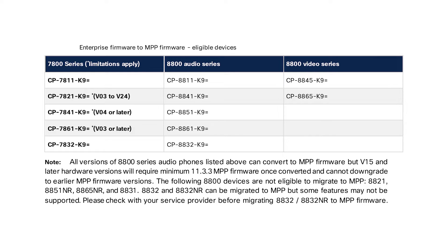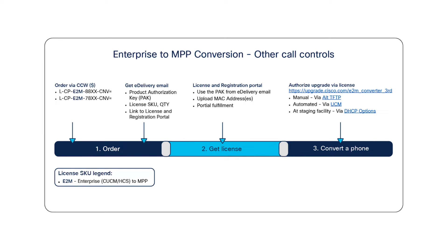Once you have confirmation, you need to order and obtain a classic migration license from a Cisco partner, one for each phone. They're sold in bundles if you have more than a few phones. The license options are shown under the Enterprise to MPP Conversion Other Call Controls section. There is one license for the 7800 phones and another for the 8800 models, and both of them have E2M in them, which signifies that the license is for the conversion from Enterprise to MPP.